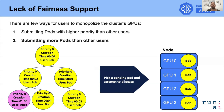Another way to monopolize the GPUs is to submit as many pods as possible. This will cause more pods to be in the heap and even have smaller creation times. As you can see in this example, Bob has submitted many pods and the heap contains mostly his pods, and therefore he will also have more GPUs allocated.